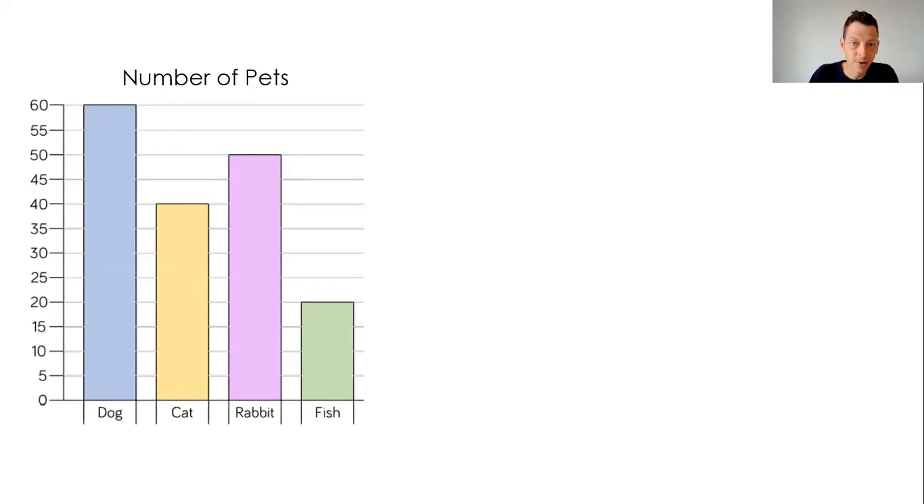And then we could look and actually it was the number of pets. There we go. And it's dog, cat, rabbit and fish. And then I could say, what do you notice from here? And ask children to make specific observations.